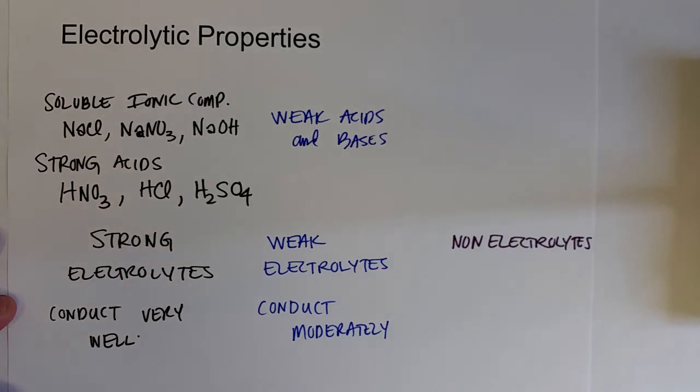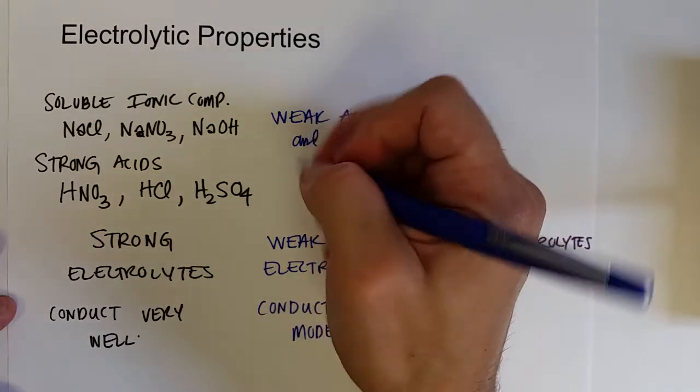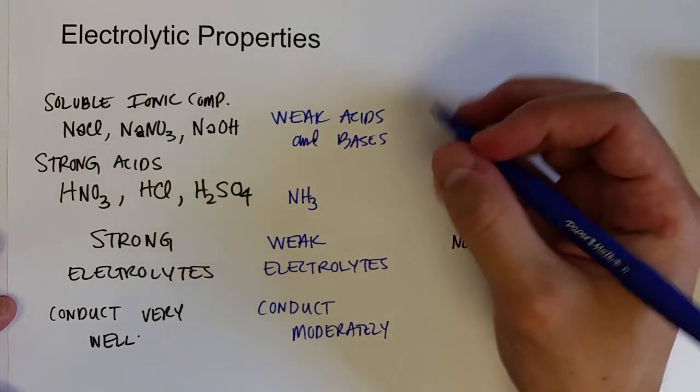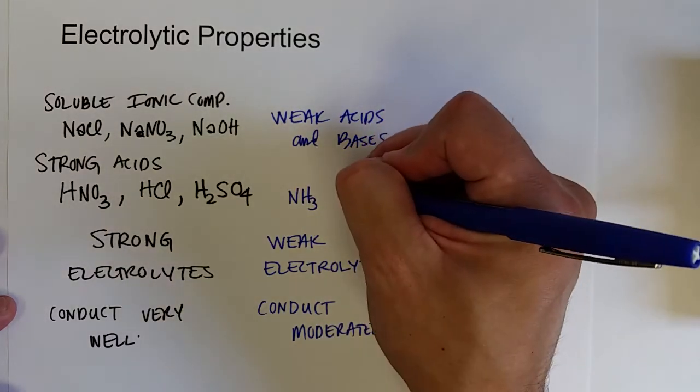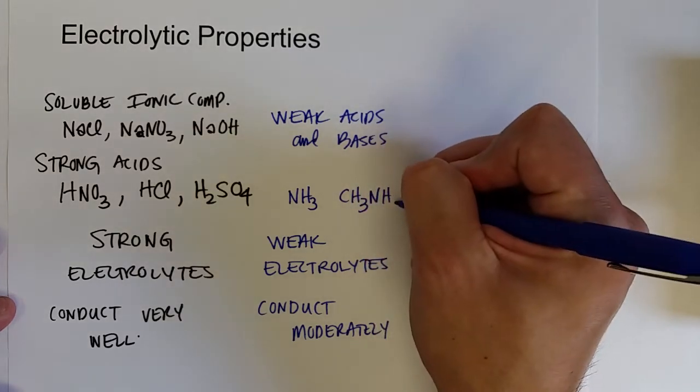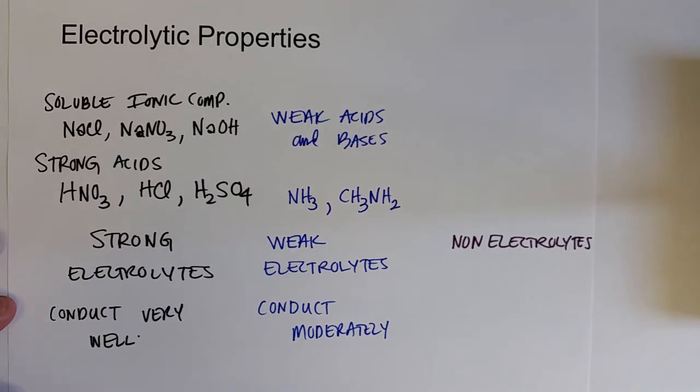So weak bases tend to be nitrogen-containing molecules like ammonia we talked about. Or when we talk about organic chemistry, eventually amines. So CH3NH2 is methyl amine. That would be another weak base.